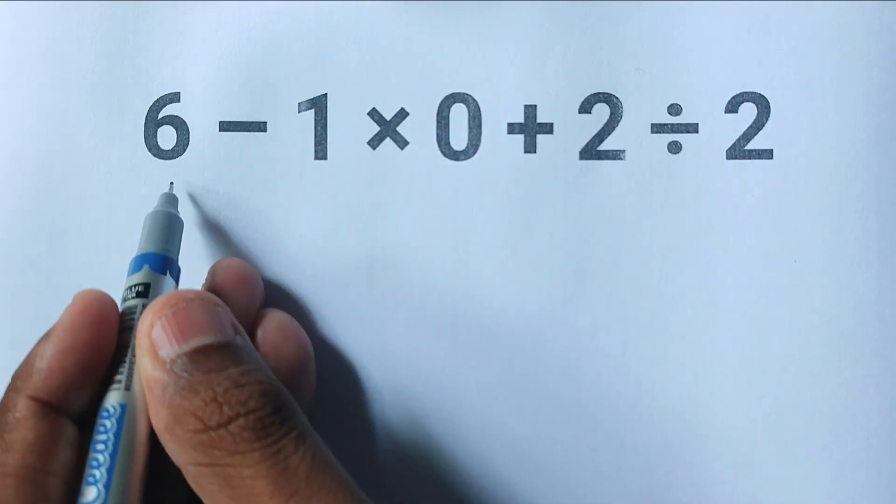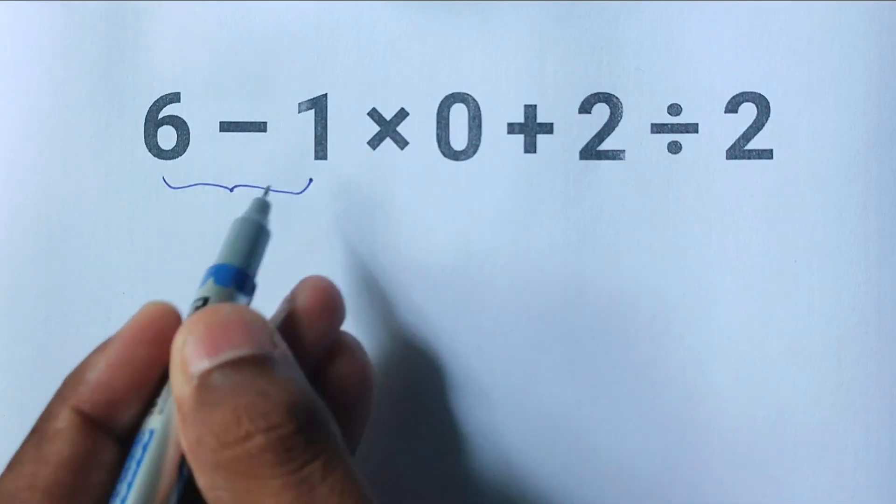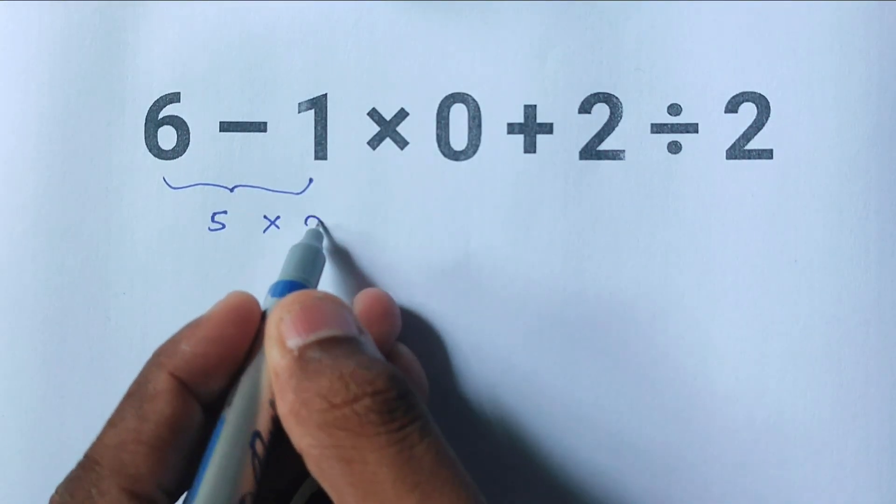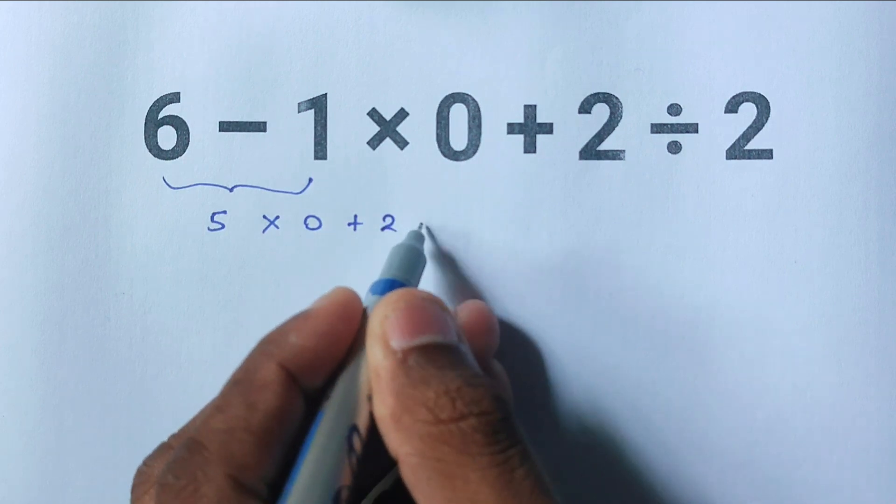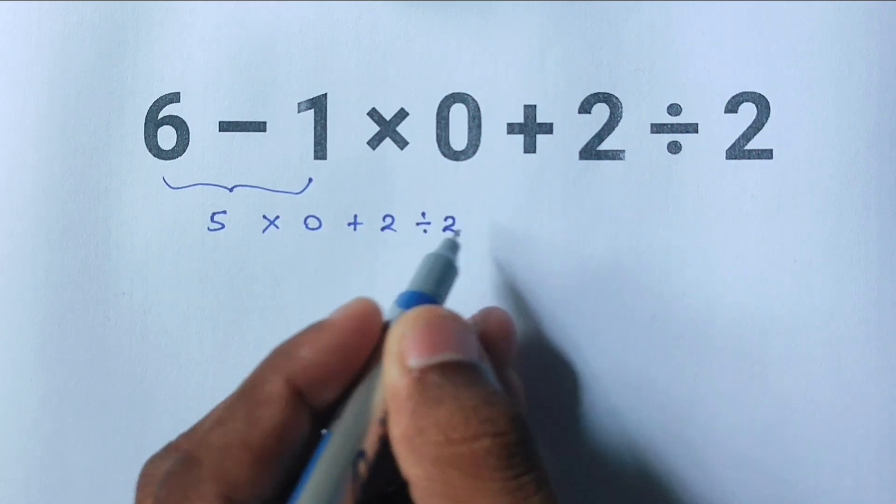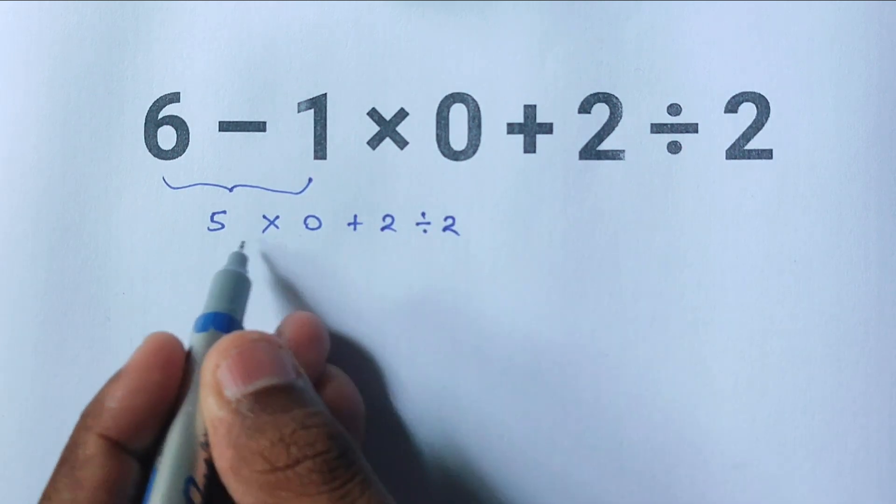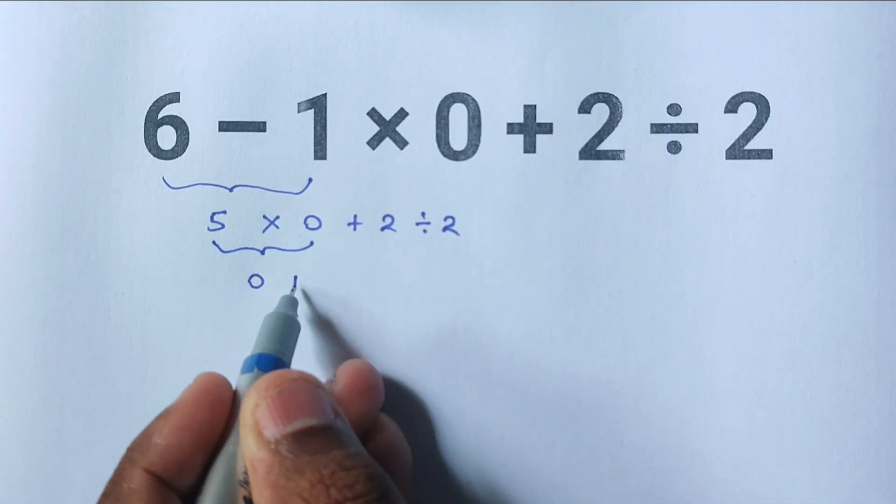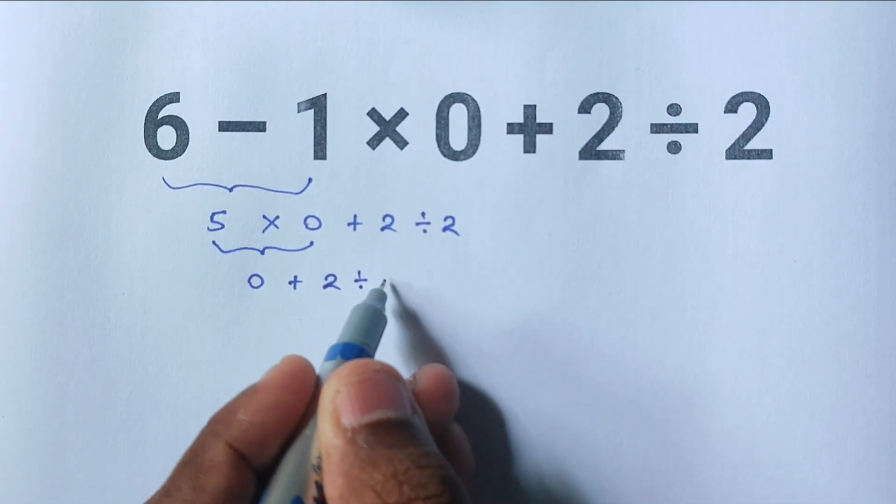That gives 5. Now the expression becomes 5 times 0 plus 2 divided by 2. Next, they multiply 5 times 0, which equals 0. Now the expression becomes 0 plus 2 divided by 2.